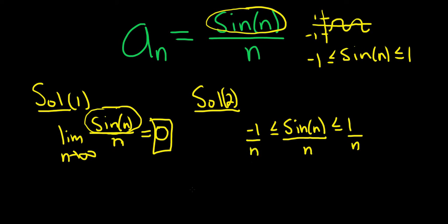And now you just take the limit of each piece. So we have the limit as n approaches infinity of negative one over n, that's equal to zero. We have the limit here as n approaches infinity of one over n, that's equal to zero.